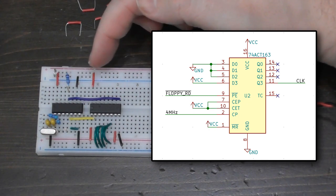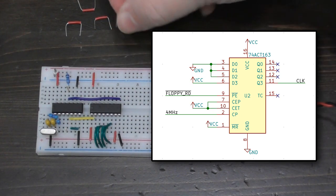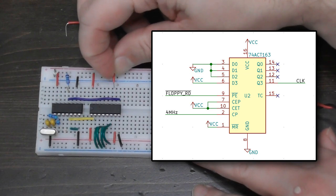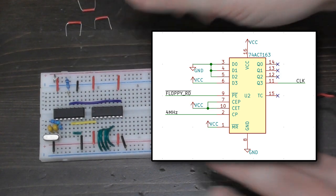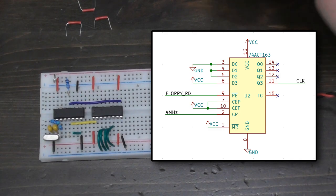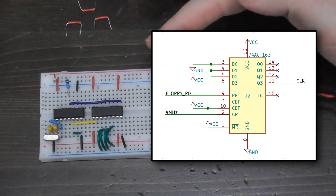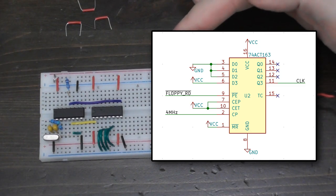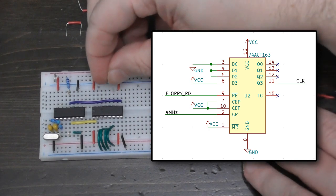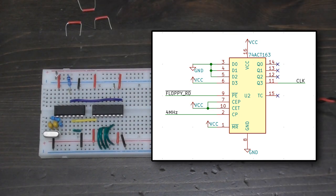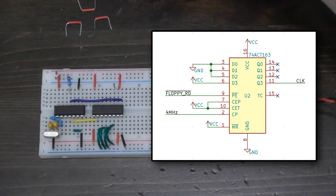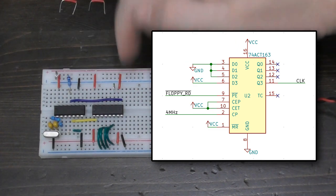There's one more enable pin here — I think this might be the carry enable. Both enable pins need to be set high for the counter to tick. Pins 11 through 14 are the output counter value. The only one I'm really interested in is pin 11, which is the high bit of the output. I'm going to put a little probe point there so I can attach the scope to it later. I'm going to ignore all the other outputs, and there's also a carry output on pin 15 that I don't care about either.